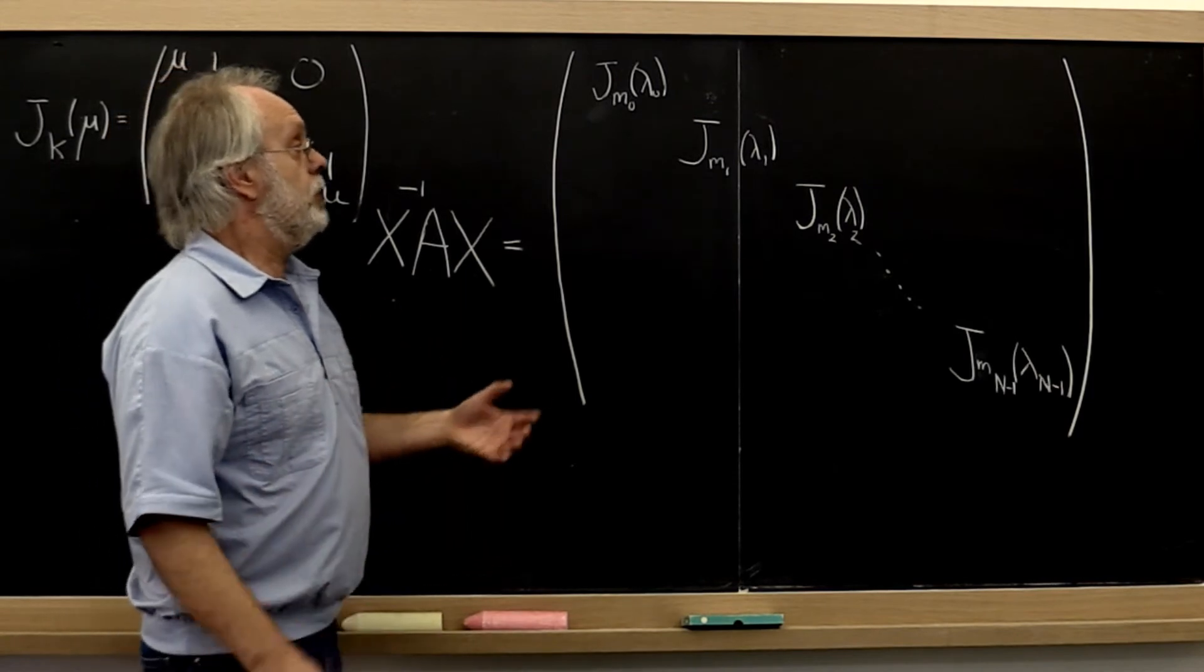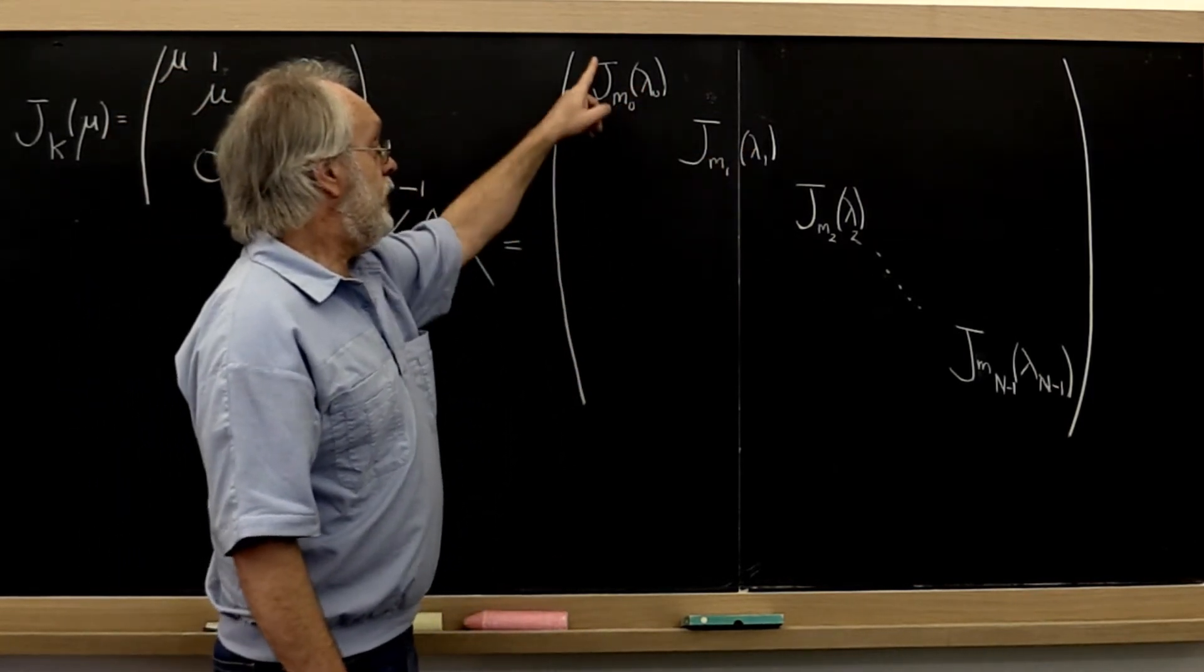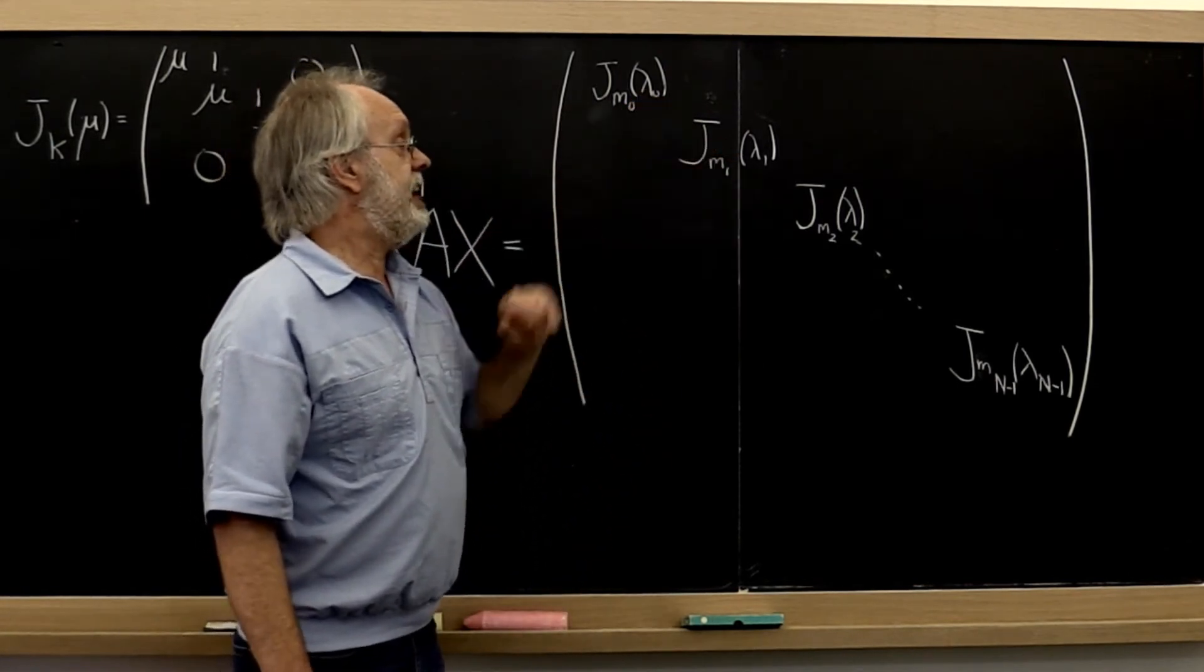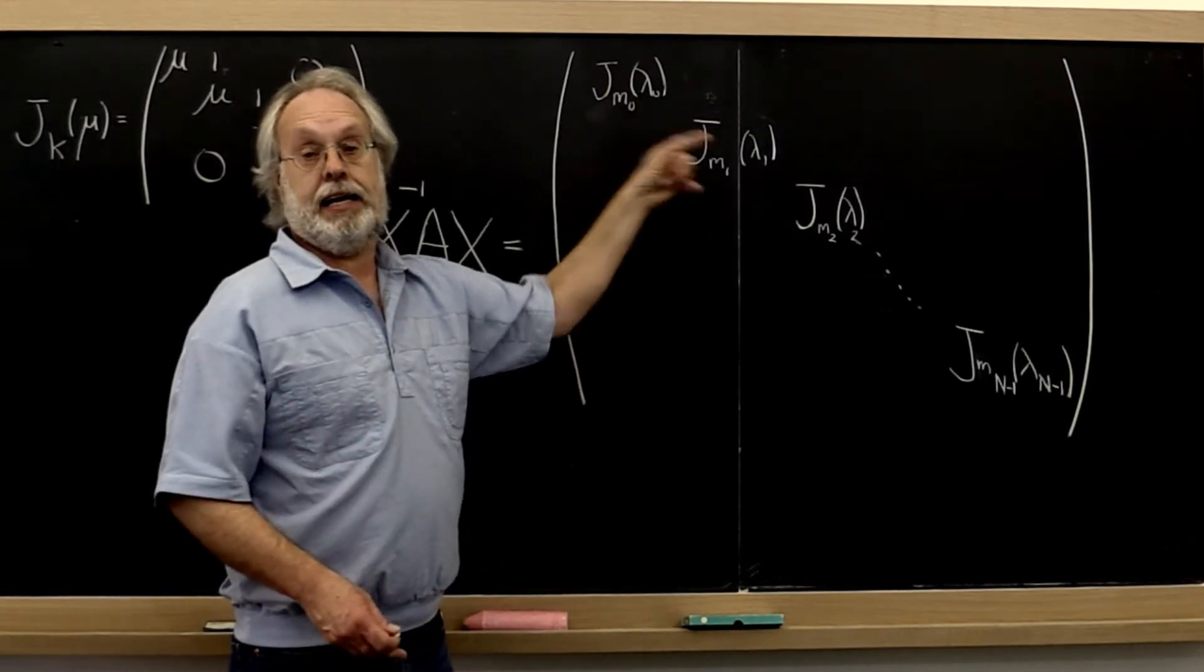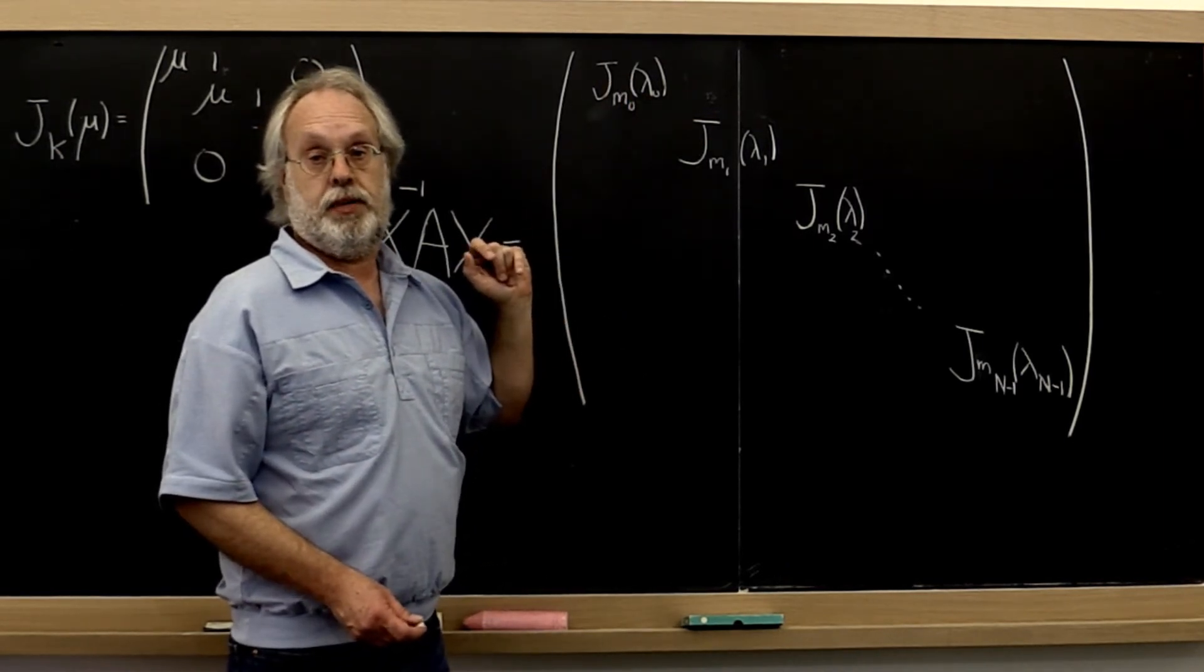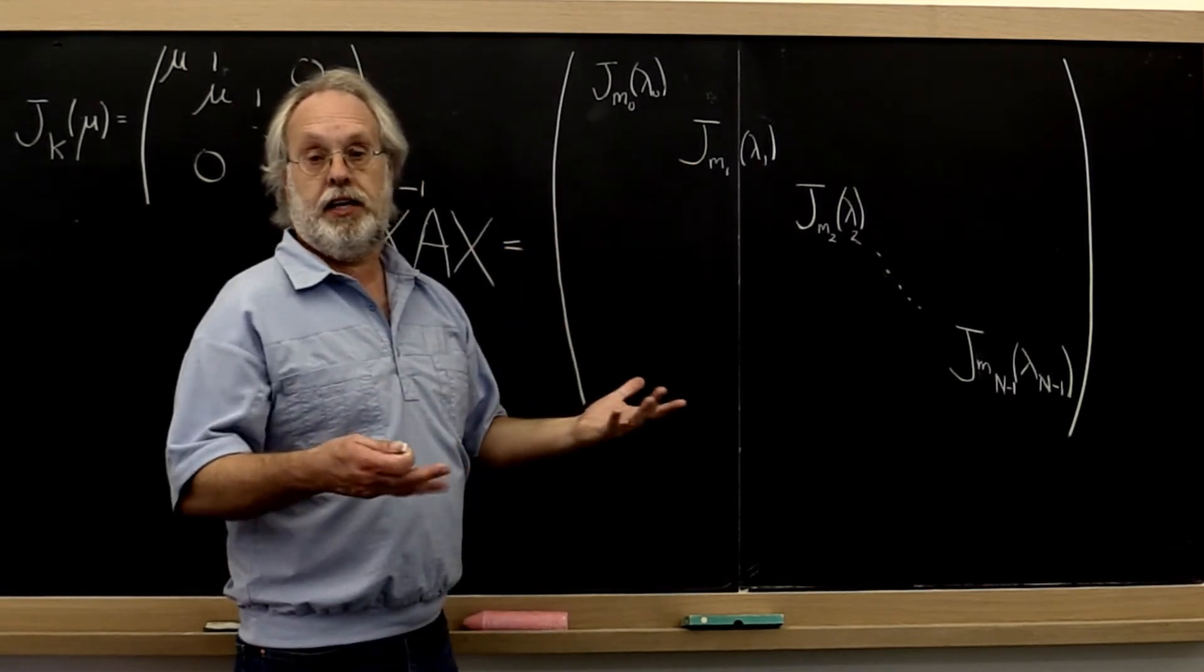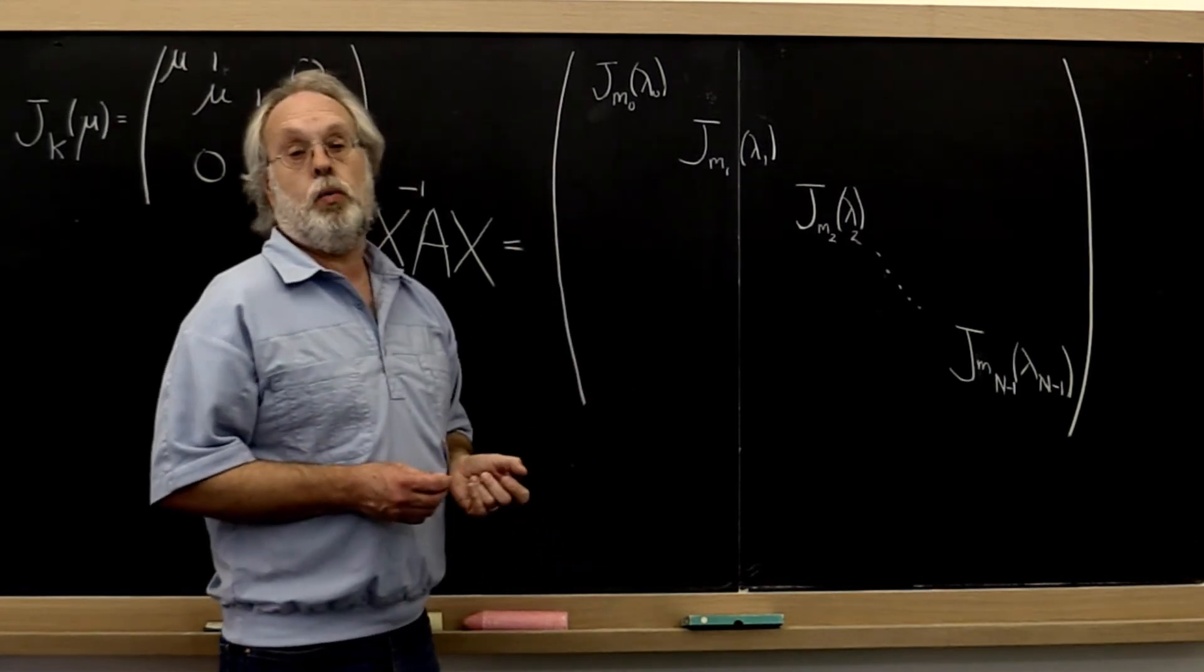The geometric multiplicity of an eigenvalue equals the number of Jordan blocks that have that eigenvalue as its eigenvalue. In other words, it's equal to the number of linearly independent eigenvectors associated with that eigenvalue.